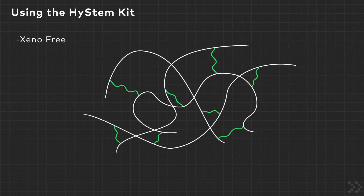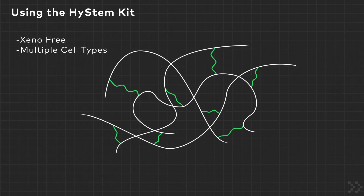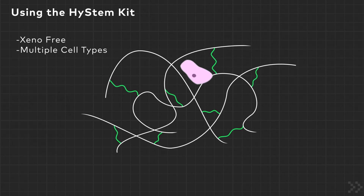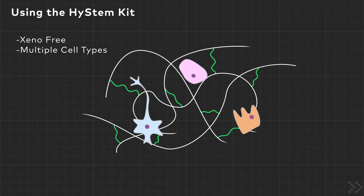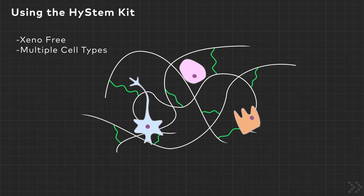Hystem provides a xeno-free viscoelastic matrix that is physiologically relevant for many cell types. It works exceptionally well for stem cells, neurons, and other types that natively grow in an HA-rich environment but do not need many attachment factors.